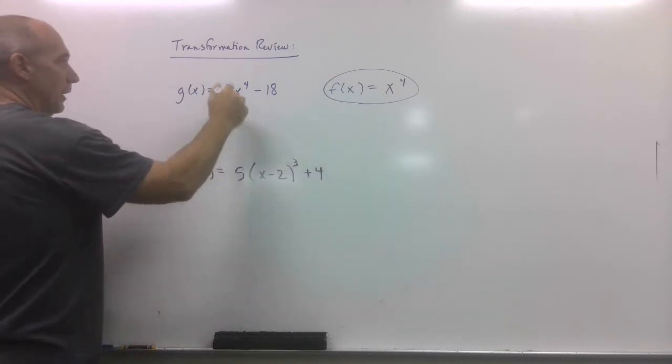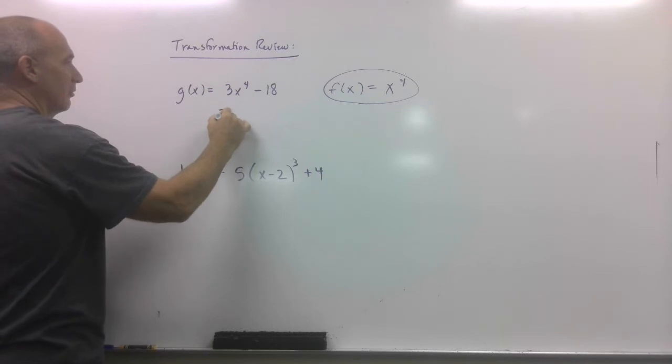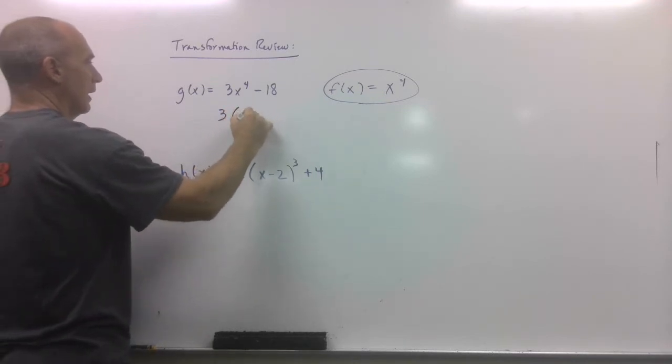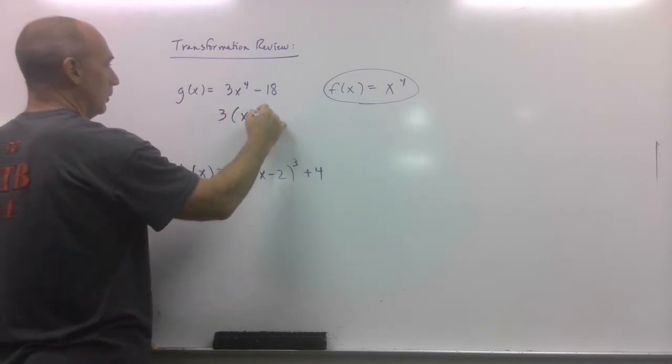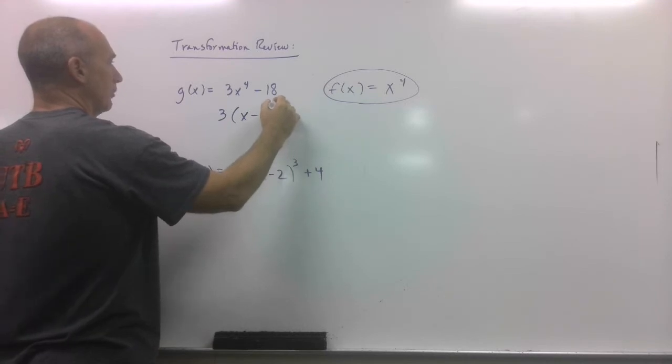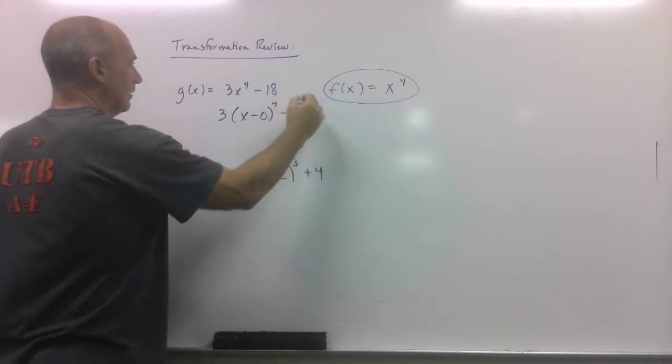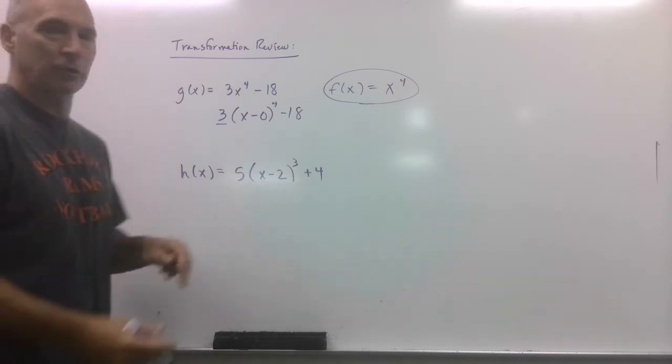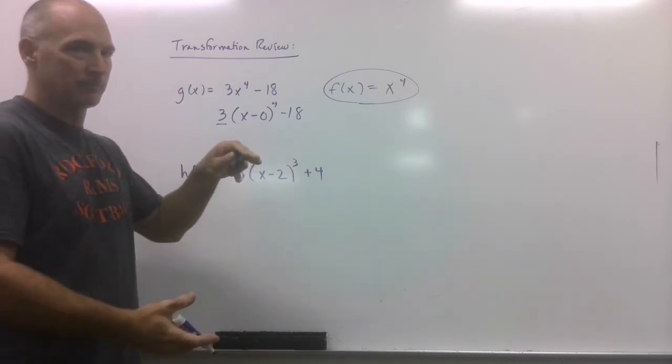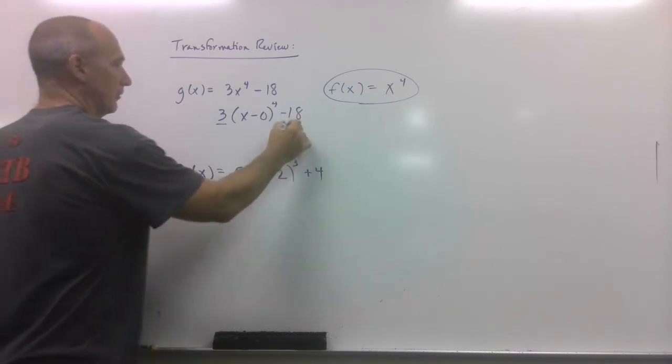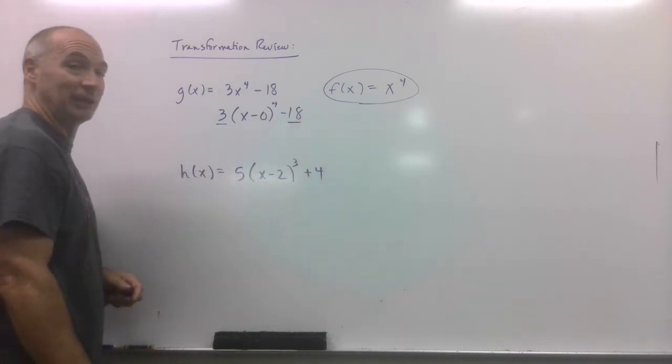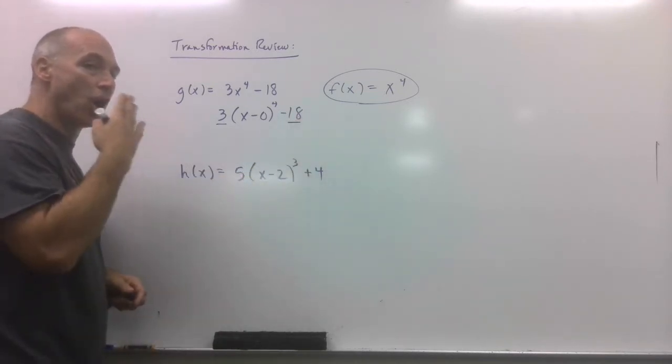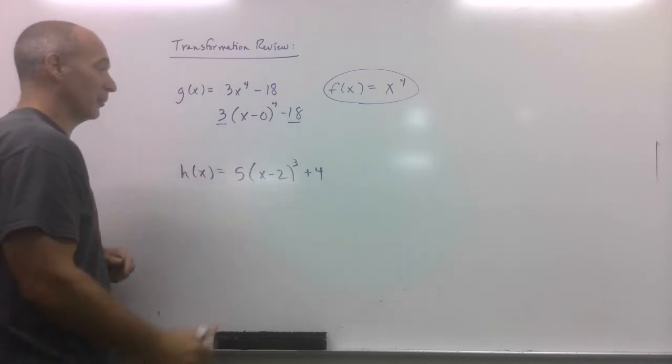So, what happens? Well, what do you guys? This is the same thing as three times x minus zero, or plus zero, to the fourth, minus 18. So, what does this do? Well, that's a vertical stretch factor of three. Okay? What does that do? Well, that just goes down 18. So, hopefully that's a big time review for you guys.